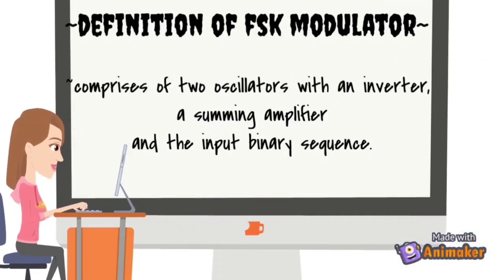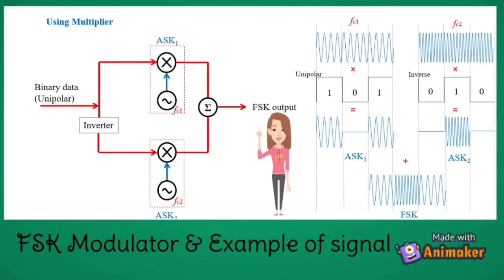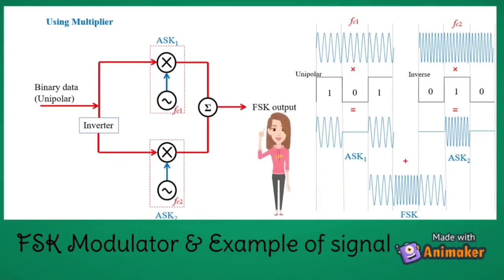Let's see the definition of FSK modulator. It comprises of two oscillators with an inverter, a summing amplifier, and the input binary sequence. As we can see, there are two oscilloscopes inserted with carrier signals of different frequencies. The binary data will be inserted where on one side it will be non-inverted and on the other side it will be inverted. Finally, a summing amplifier will add both the signals produced.